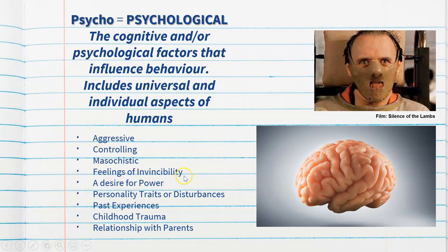They may have feelings of invincibility — believing they cannot get caught — and a high desire for power, which is very characteristic of someone with a personality disorder such as antisocial or narcissistic, which I'll talk about in separate videos. General personality traits or disturbances can contribute to the onset of criminal behaviour. It may also be due to past experiences, memories, abuse in childhood, and childhood trauma, as well as a strained relationship with parents — all psychological factors involving perception, personality, or cognition.